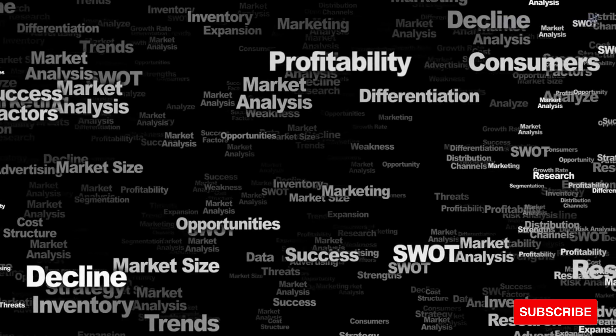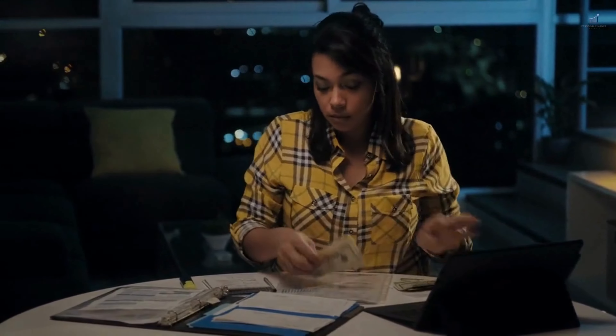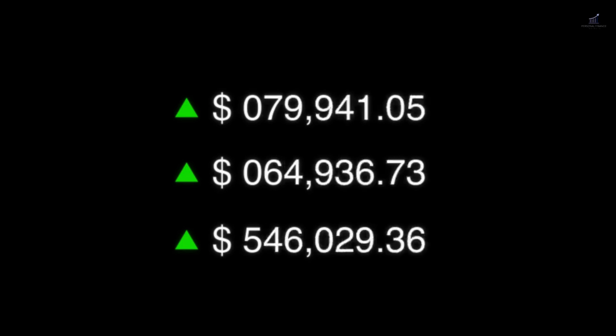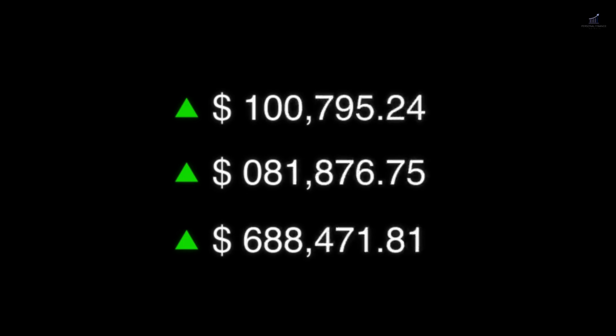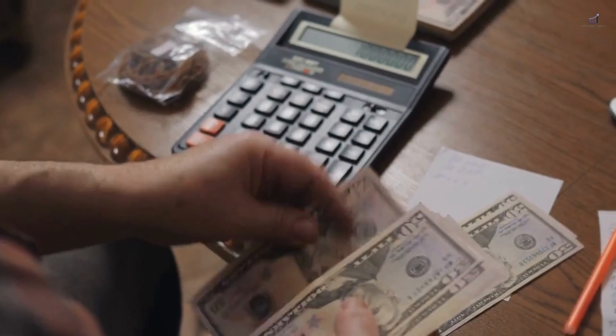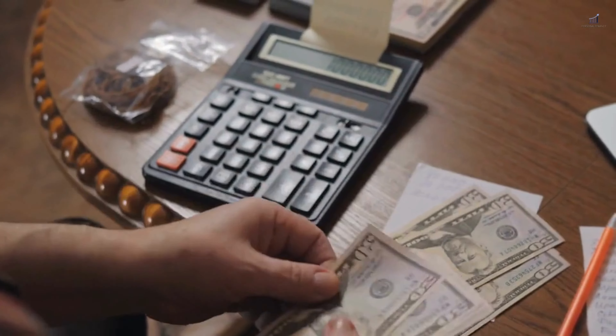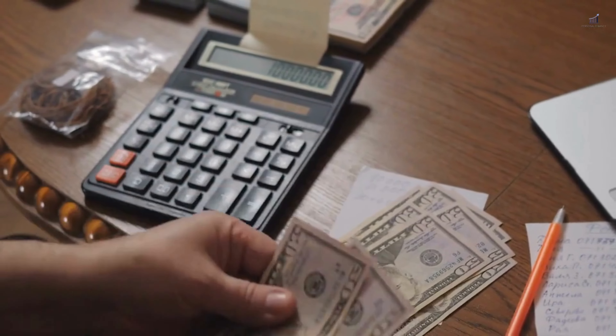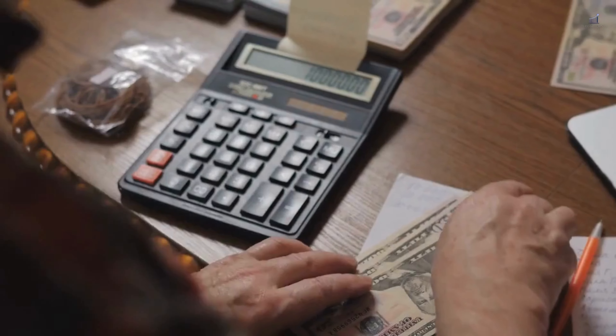Step 4: Create a budget. A budget serves as a powerful tool to allocate your income effectively toward debt repayment and essential expenses. Start by tracking your income and expenses to gain a clear understanding of your spending patterns. Identify areas where you can reduce expenses and redirect those savings toward paying off your debts more aggressively.